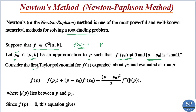We require that f'(p₀) ≠ 0 and that |p - p₀| is very small. Consider the first Taylor approximation for f(x) about p₀, evaluated at x = p: f(p) = f(p₀) + (p - p₀)·f'(p₀) + [(p - p₀)² / 2!]·f''(ζ(p)), where ζ(p) lies between the root p and the initial approximation p₀.